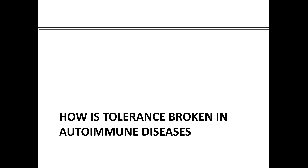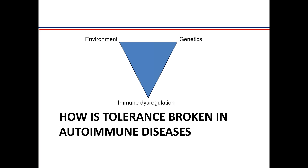Even if small amounts of autoreactive cells enter the periphery, they are kept under check by regulatory T cells. But still, almost 7 to 8% of the population has one or another form of autoimmune disease. How is this tolerance broken? It can be due to genetic defects, environmental triggers, or immune dysregulation.